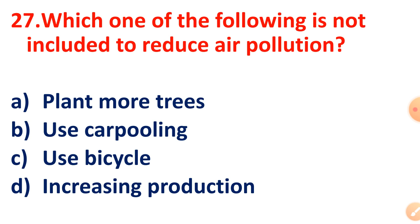Question 27: Which one of the following is NOT included as a measure to reduce air pollution? Read the question carefully — the answer is Option D, Increasing production.